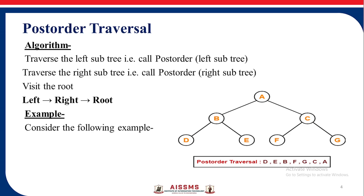Consider the following example. Here a binary tree is given to us. Applying the post-order algorithm, we first do the left subtree traversal — visiting D, then E, then root B. Then we move on to the right side: F, G, C, and lastly A. So the post-order traversal is D, E, B, F, G, C, A.